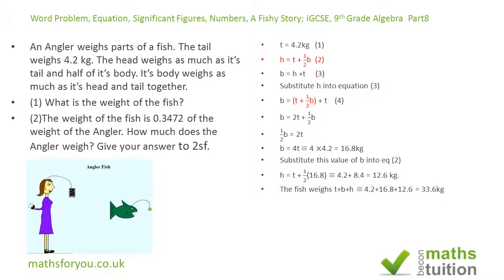Now we need to find the weight of the fish in total. So if we add the weights of the tail plus the weight of the body plus the weight of the head we end up with 33.6 kilograms, that's for question one.